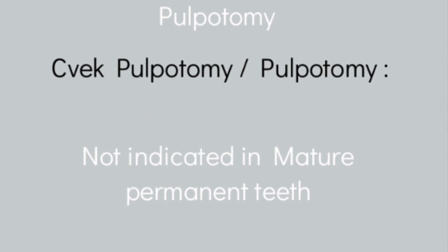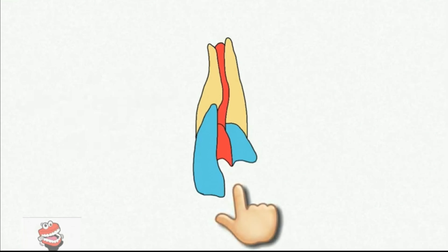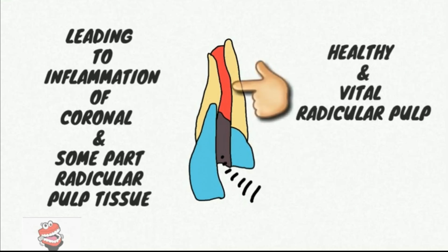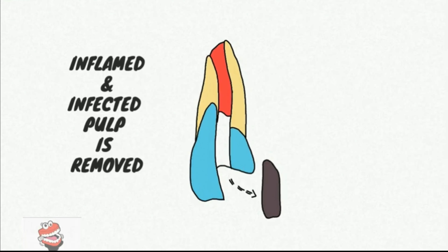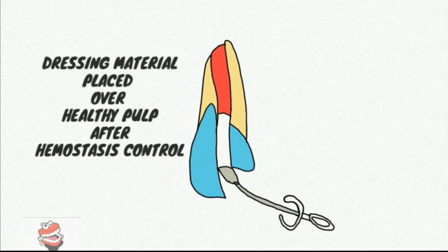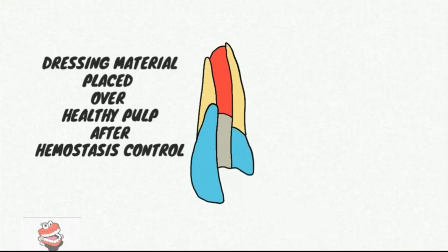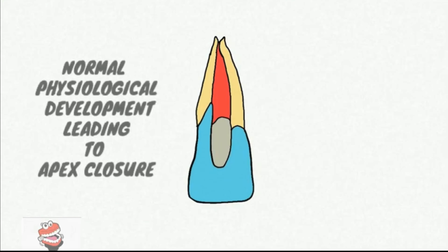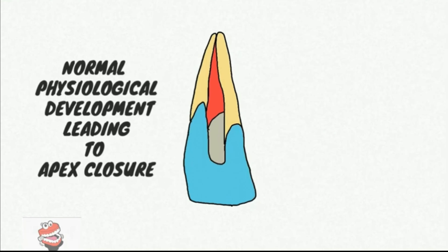The last vital pulp therapy is apexogenesis — formation of the root or apex. The main aim is to maintain pulp vitality in order to stimulate continued root development for a stronger root. It is vital pulp therapy where the pulp is diseased but healthy, and vitality is maintained so the root finishes development. Materials used include calcium hydroxide or MTA. Apexogenesis technically includes any of the vital pulp therapy procedures — indirect pulp cap, direct pulp cap, CVEK pulpotomy, or pulpotomy.